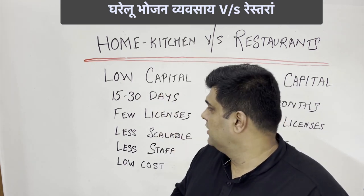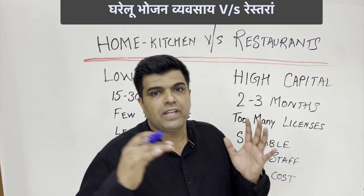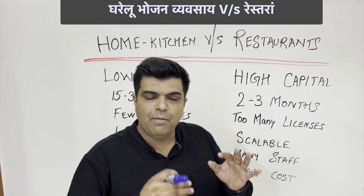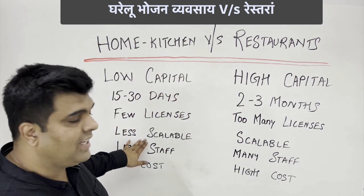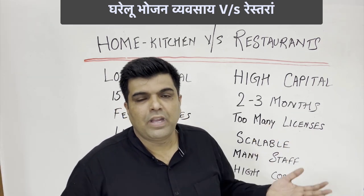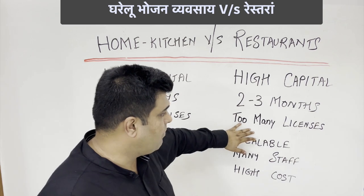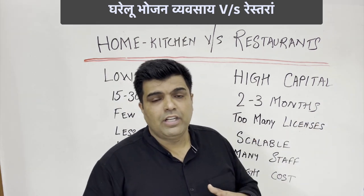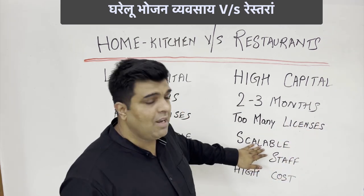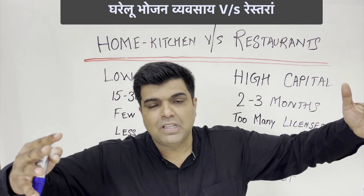The fourth point is about disadvantages. You might think that home kitchen is better than all restaurants, but that is not what I mean. There are some disadvantages of a home kitchen. The first is that it is less scalable. Scalable means that you may not be able to generate sales of 1 to 1.5 or 5 million per month. You cannot make 10–15,000 in sales compared to a restaurant, which has a bigger space and a bigger kitchen.